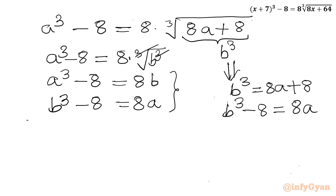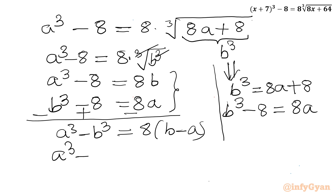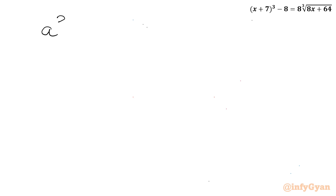Subtracting the second equation from the first, we get a³ - b³ on the left-hand side. The -8 and +8 cancel. On the right-hand side we have 8b - 8a. Taking all terms to one side: a³ - b³ - 8(b - a) = 0, which we can write as a³ - b³ + 8(a - b) = 0.